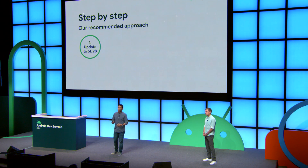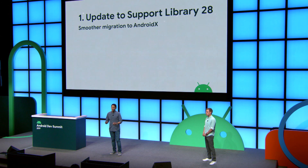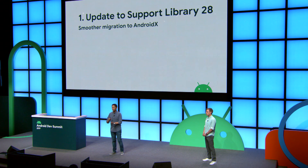First, we want to update the Support Library to version 28. If you're on an older version like 26 or 27 and try to make the migration all the way to AndroidX, you're probably going to have a bad time. That's because you'll need to address not only namespace changes but also API changes between 26, 27, 28, and AndroidX. First update to version 28, address all those API changes, get your app compiling with 28, and then make the jump over to AndroidX.